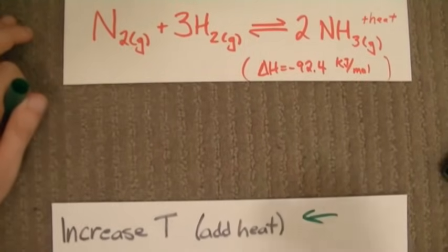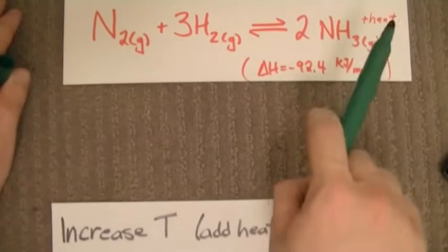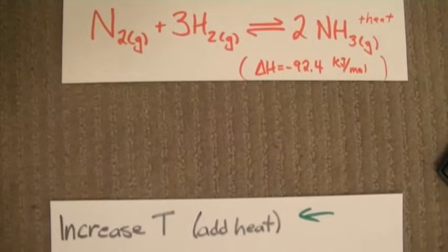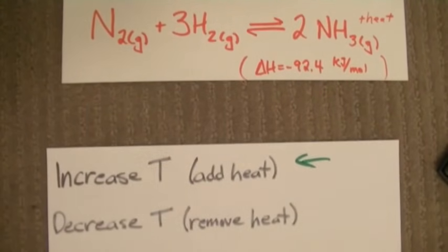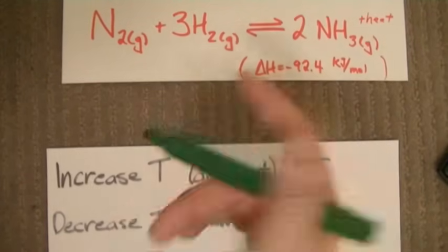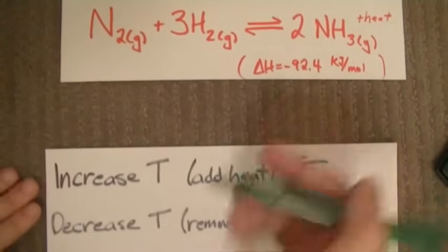Ah, that's left. My bad. We want to consume heat when we're adding heat, so we shift to the left. For this exothermic reaction, if we decrease the temperature or remove some of the heat, we want to replace it, so we shift to the right. And I actually mean the right this time.